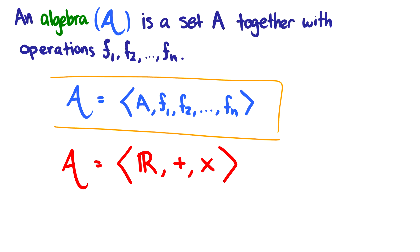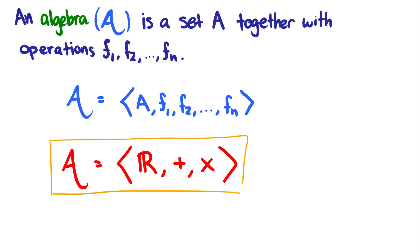Here's something a bit more familiar: the algebra A consisting of the real numbers, addition, and multiplication. We're used to things like 3 + 2 = 5, which is an operation in the real numbers. We also have multiplication: 3 × 2 = 6. We've also encountered other algebras, such as propositional logic, as well as some other things we'll talk about later in the video.